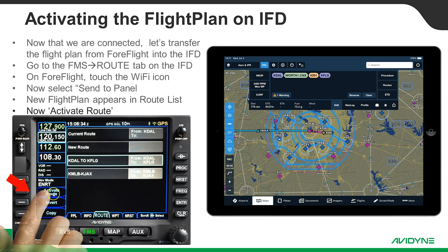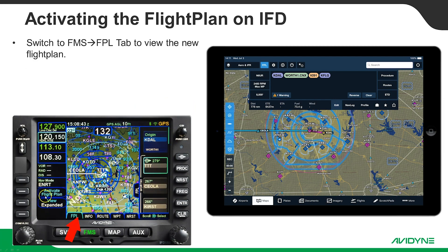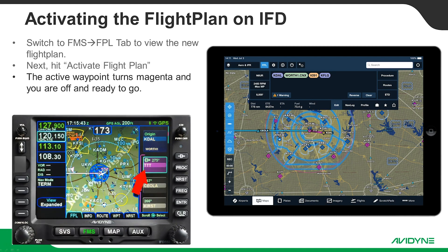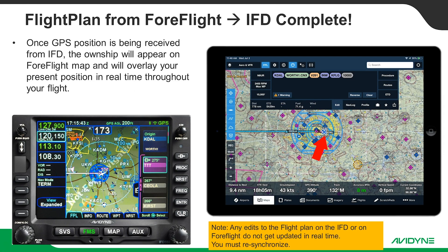Next, activate that route and you're ready to go. Touch the button to activate the flight plan and you'll see your first waypoint turn magenta, which means it's your active leg and active waypoint. Once the IFD starts receiving GPS position it'll start sending that out on the Wi-Fi, and then you'll see your own ship symbol show up in ForeFlight, meaning it's receiving present position from the IFD. It's important to point out that any edits to the flight plan in ForeFlight or on the IFD will not synchronize in real time - you'll have to manually re-sync. But GPS present position is always transmitted in real time, keeping your position overlaid on the map.